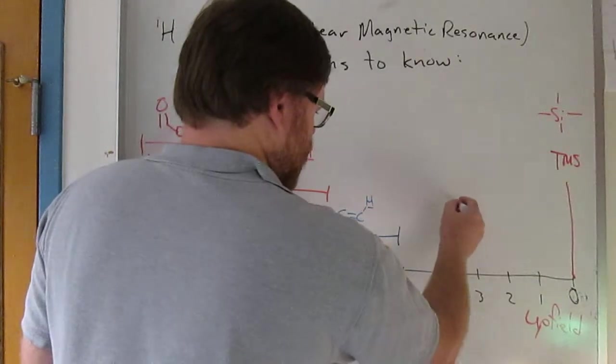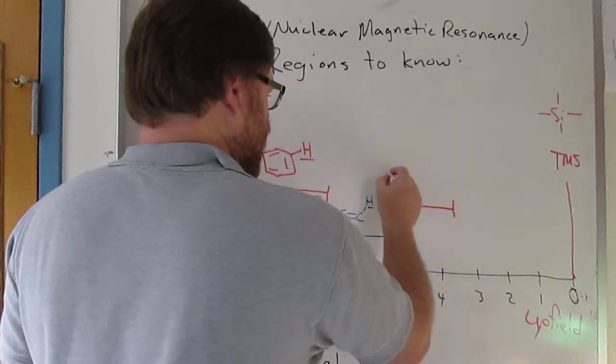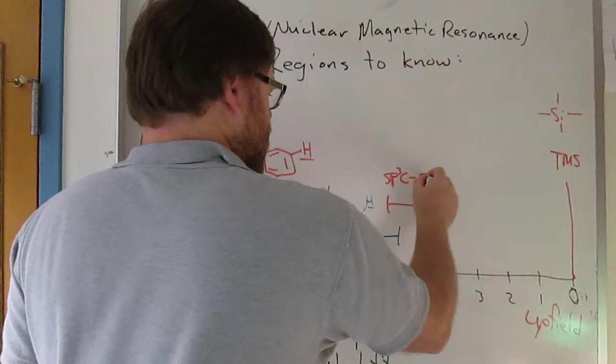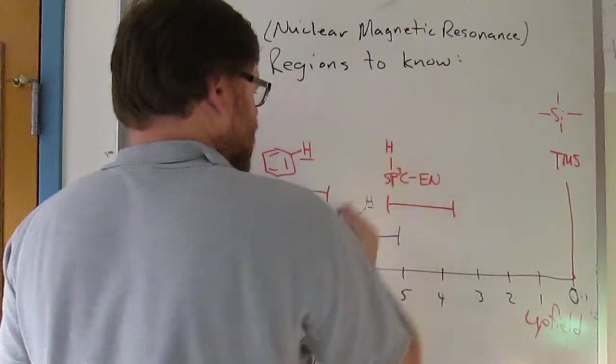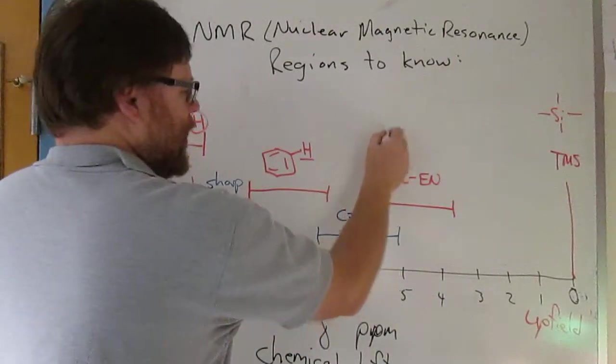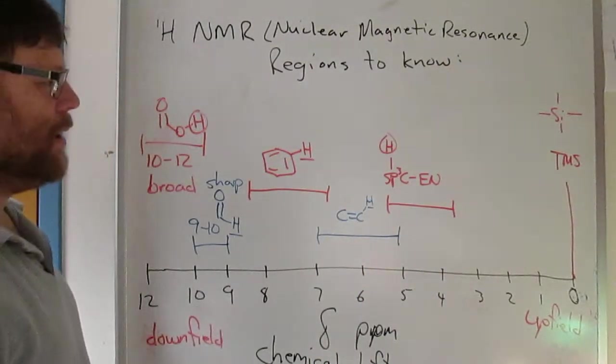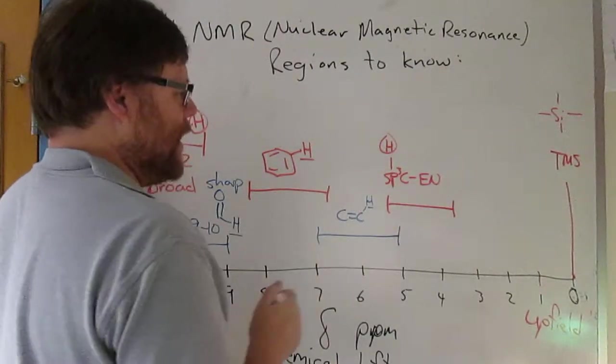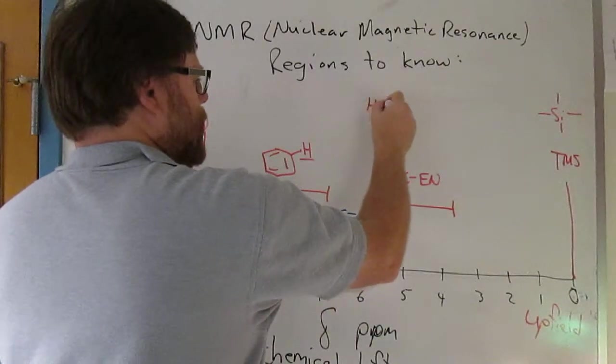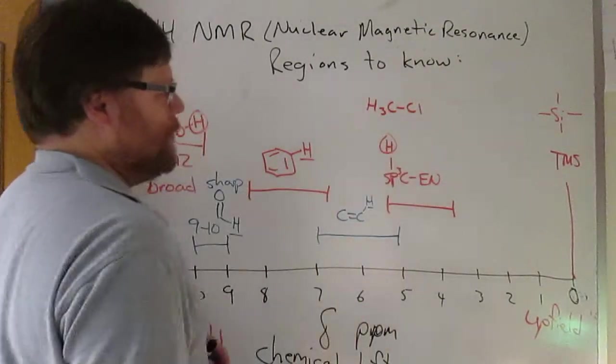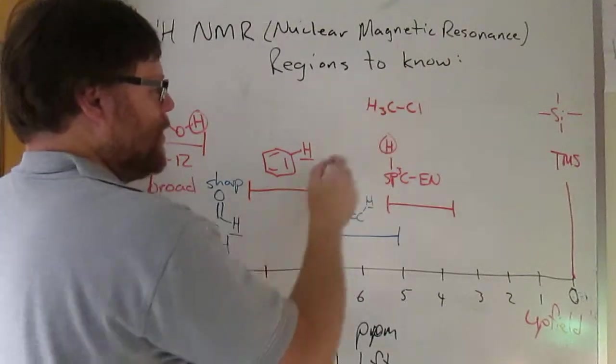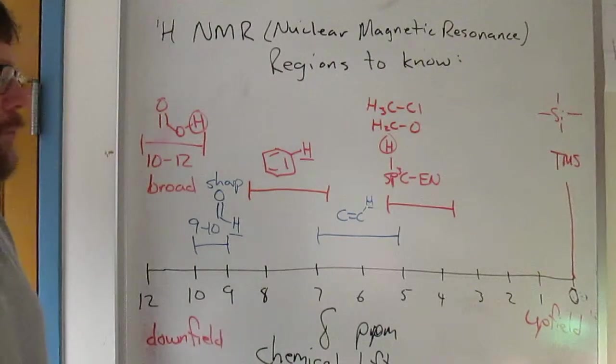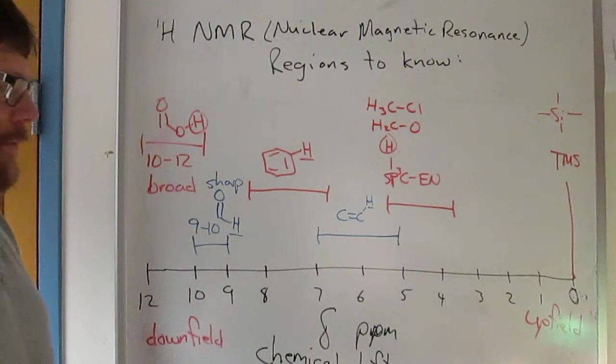From about 3.5 to 5, you have sp3 protons. We're looking at the proton in question bonded to an sp3 carbon that's bonded to an electronegative element - something like protons on a carbon bonded to chlorine or protons on a carbon bonded to oxygen.